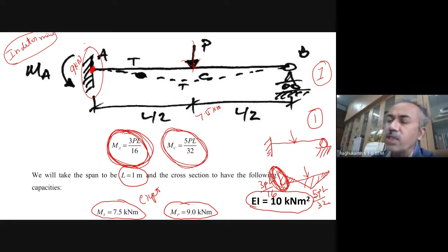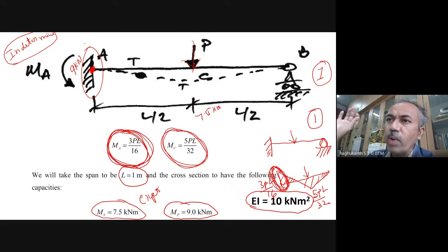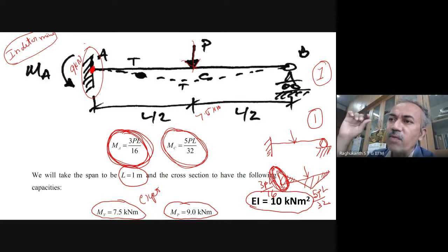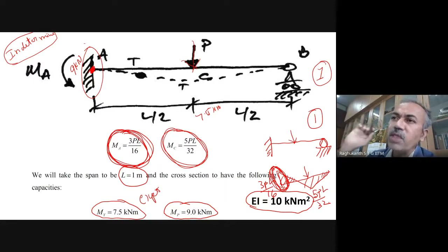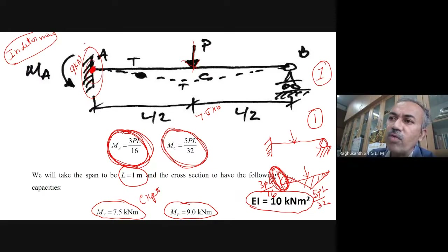We have also explained how to do plastic analysis — the straightforward incremental procedure. You take the load, do linear analysis only, find out the bending moments, and identify the places where bending moment is extremely high. That is the obvious location where a plastic hinge is going to form.